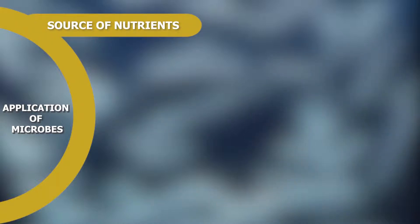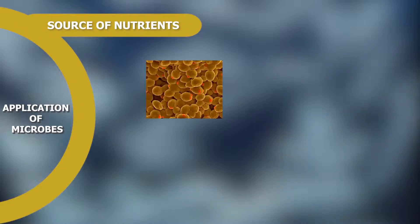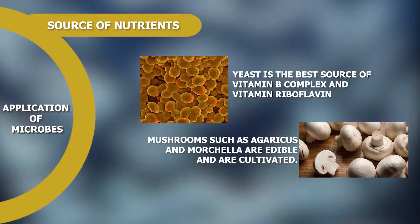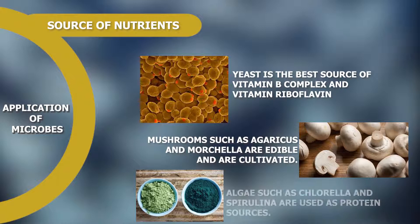Source of Nutrients: Yeast is the best source of vitamin B complex and vitamin riboflavin. Mushrooms such as Agaricus and Morchella are edible and are cultivated at large scale. Algae such as Chlorella and Spirulina are used as protein sources. Since these algae are unicellular organisms, they are known as single-cell protein.